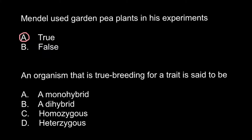The second question: an organism that is true breeding for a trait is said to be — and here are four answers to choose from: answer A, a monohybrid; answer B, a dihybrid; answer C, homozygous; and answer D, heterozygous. Let's consider each answer in turn. What is a monohybrid?